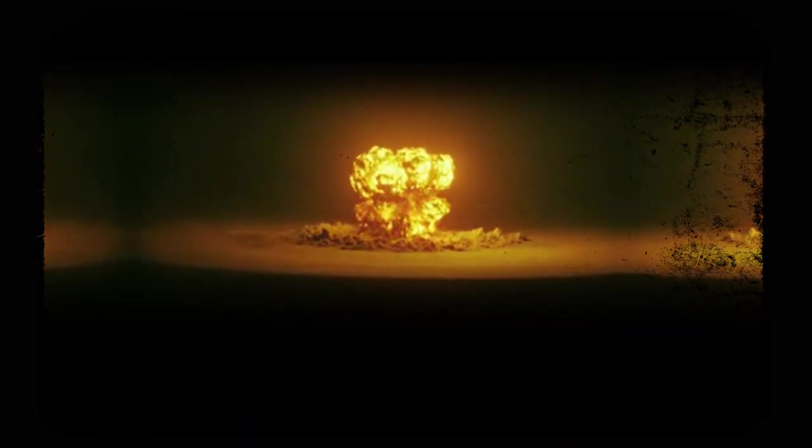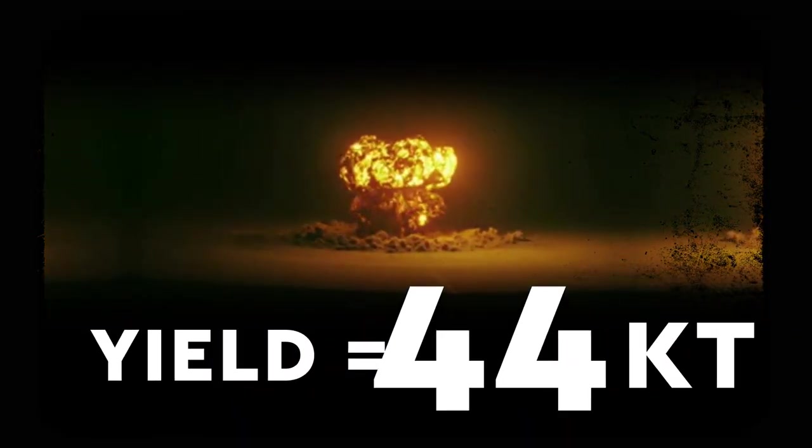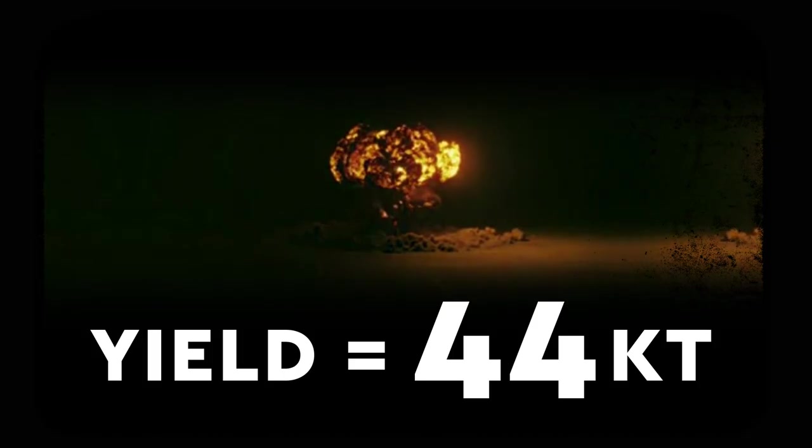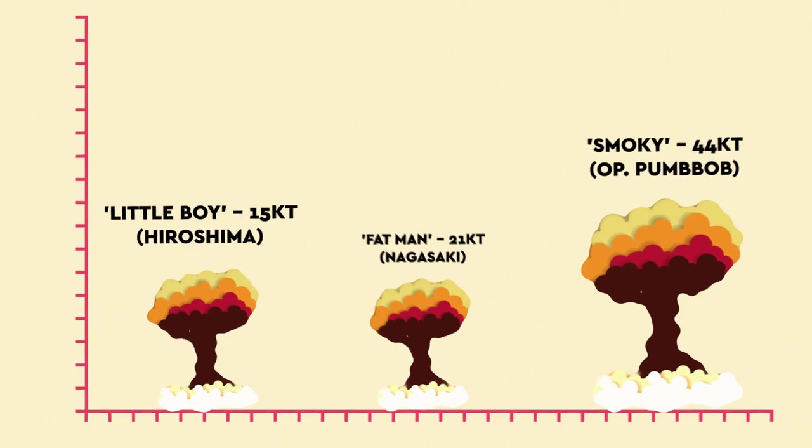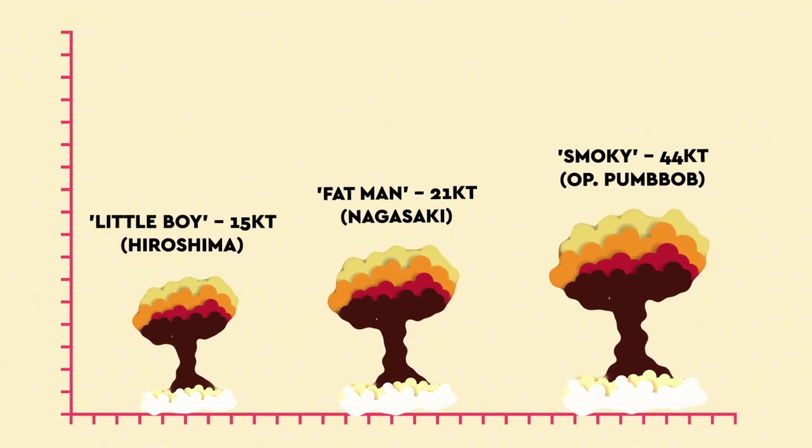Smokey wasn't exactly a small nuke either. It had a yield of 44 kilotons. For reference, that's about three times as powerful as the bomb dropped on Hiroshima, and twice that which landed on Nagasaki in World War II.